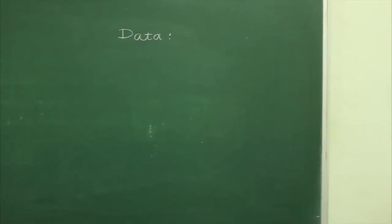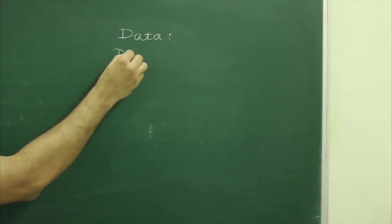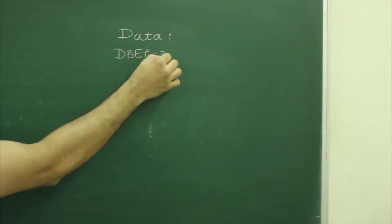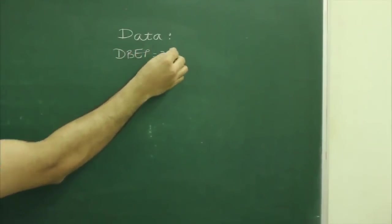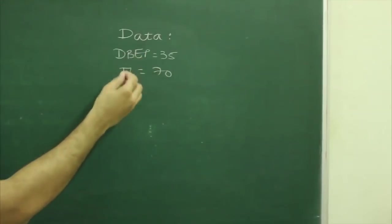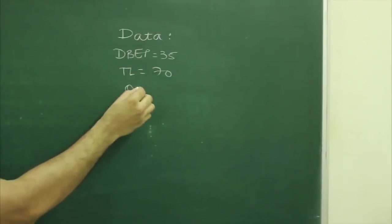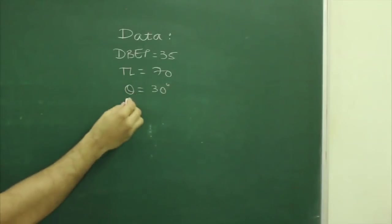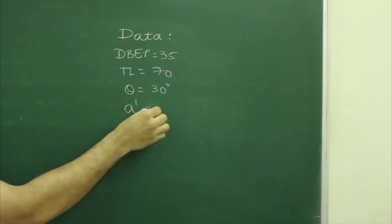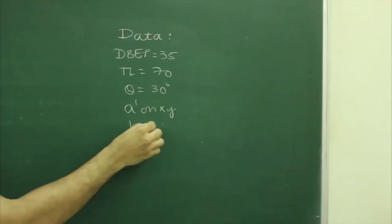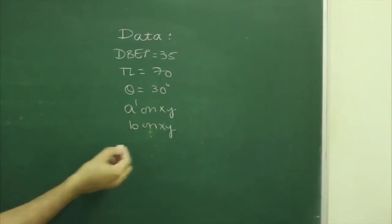Now we will write the given data. Line AB is 35 mm, with step divisions. DVP is 17 mm, theta is 30 degrees. Point E' is on the XY line and point D is on the XY line.